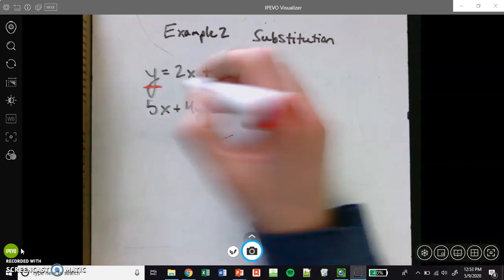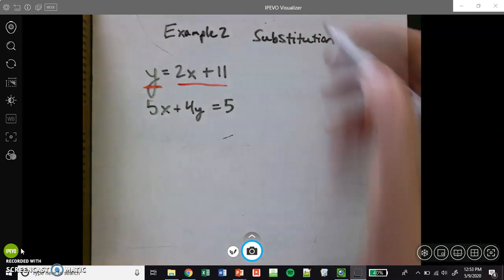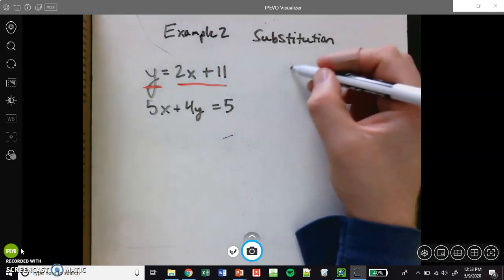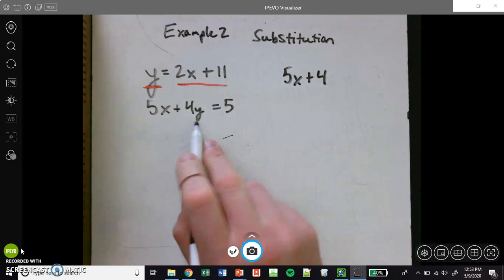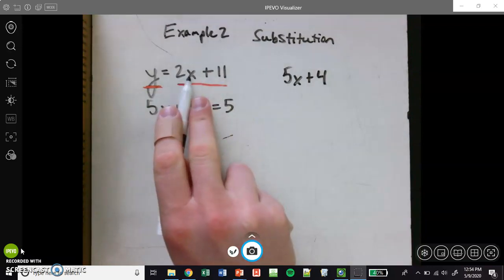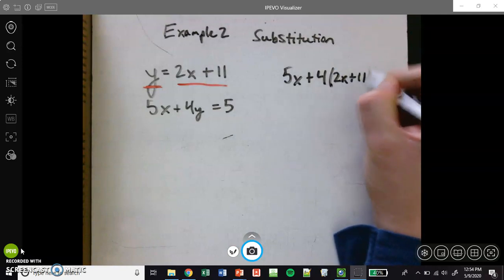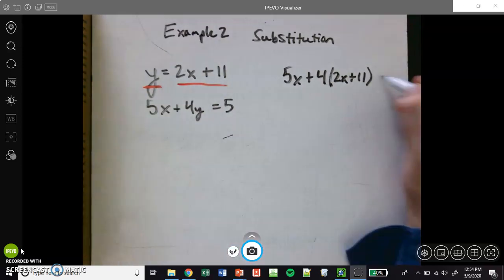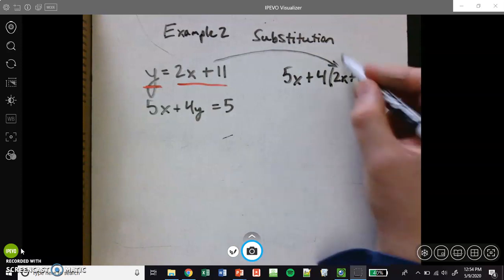So what we're going to do, y just equals 2x plus 11. So what we can do is rewrite our second equation. I'll rewrite it right over here. We can rewrite it, but instead of writing y, we'll write what y equals. Let me show you. So you have 5x plus 4, and then instead of writing y, we're going to write what y equals, y equals 2x plus 11. So we'll write 2x plus 11, and that's still equal to 5, of course. So we plugged in what y equals, we plugged it into the equation right here.